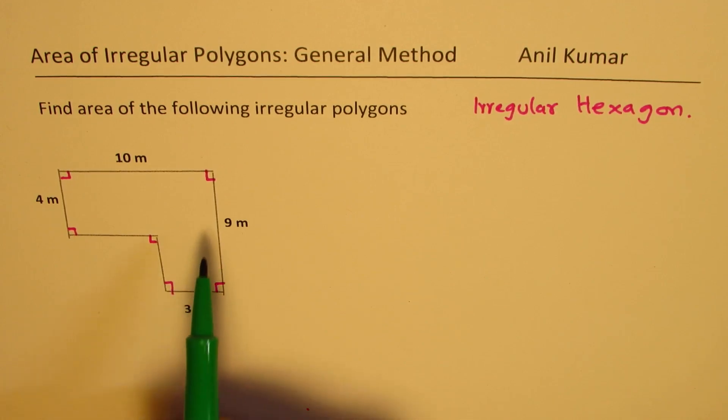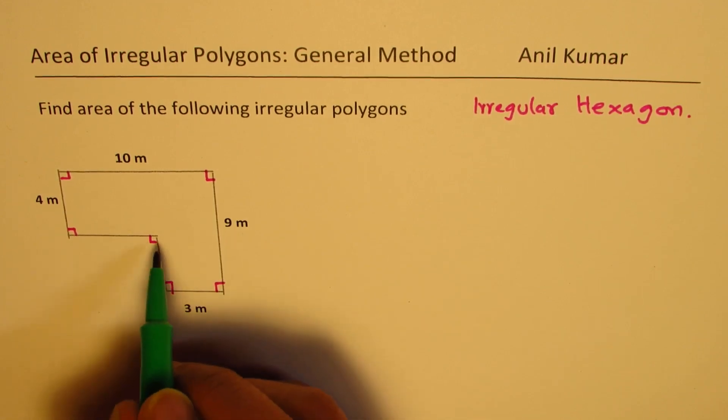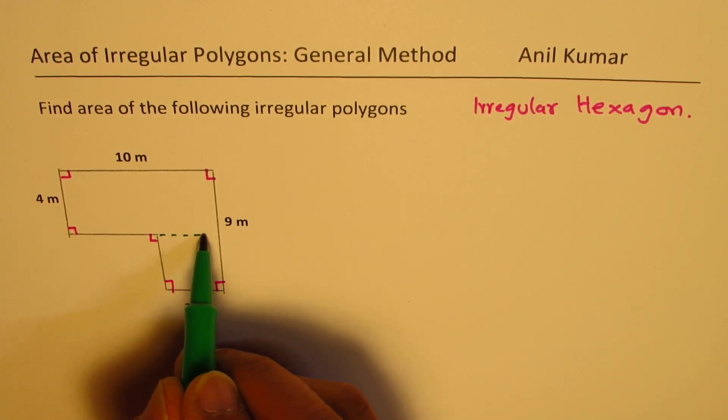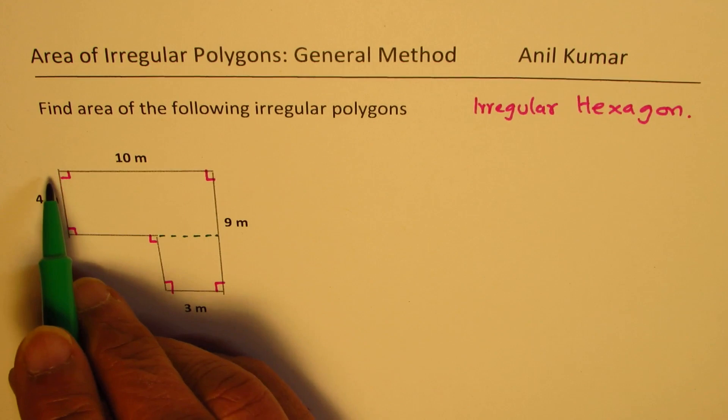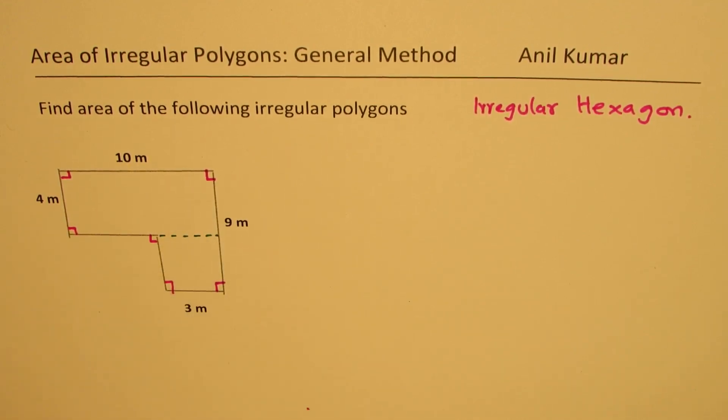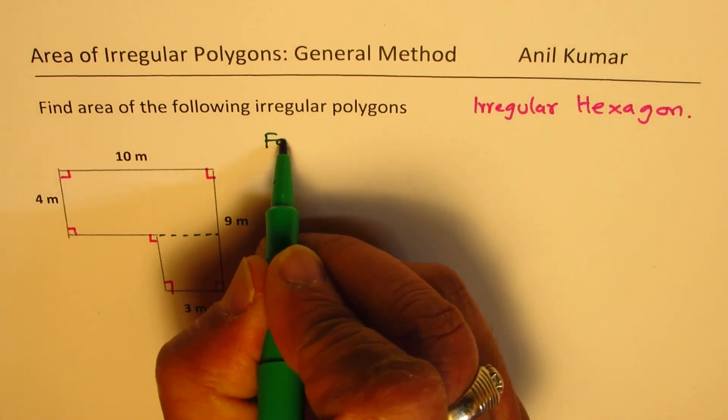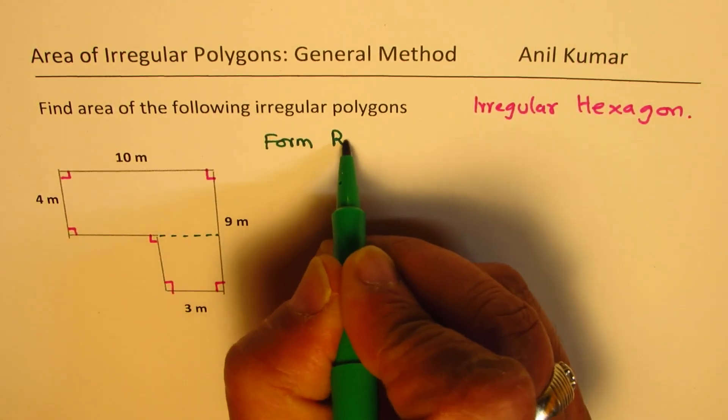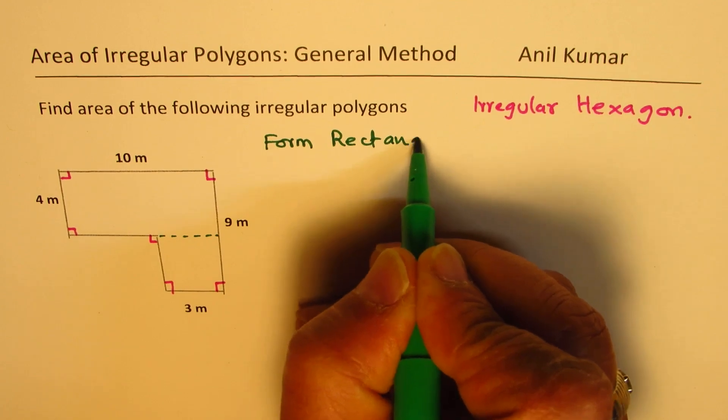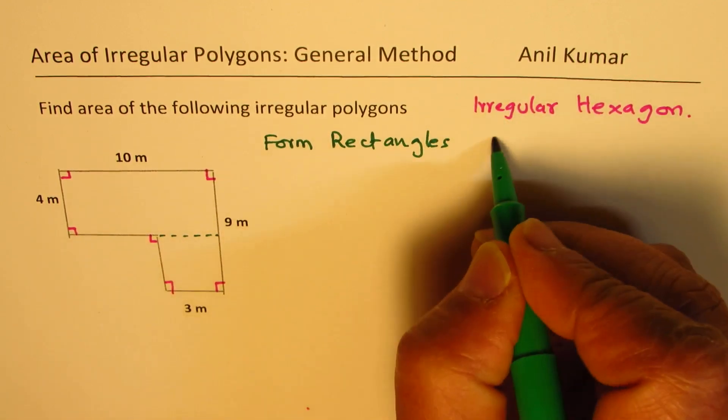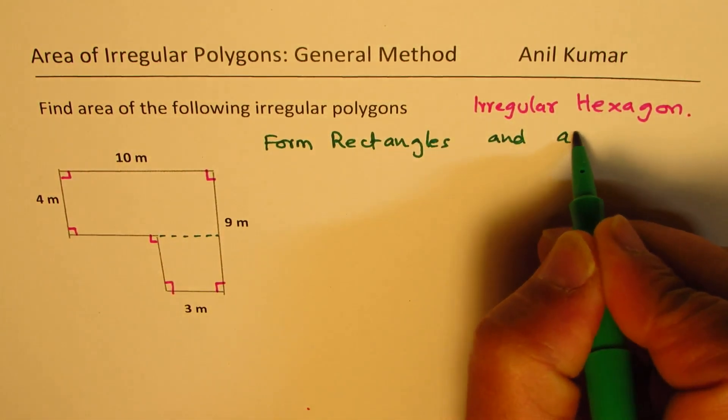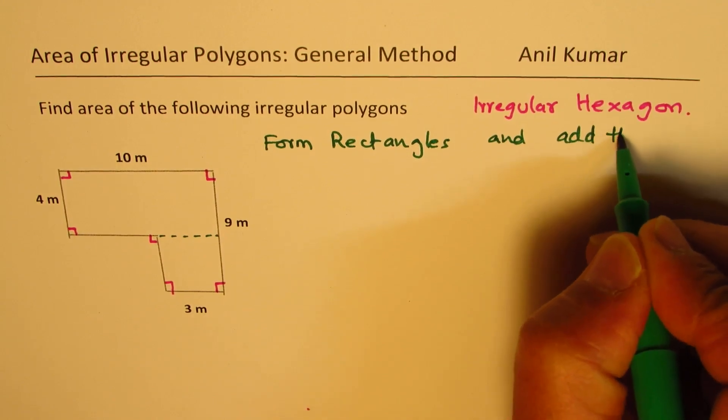Well, we can add the area of rectangles to find the area of the whole polygon. So what we can do here is that one of the options is to divide it in the form of these two rectangles. So we can form rectangles and add their area.